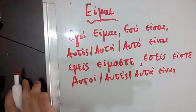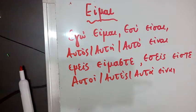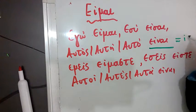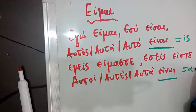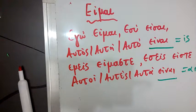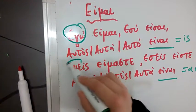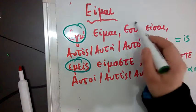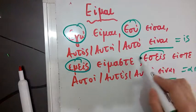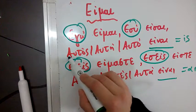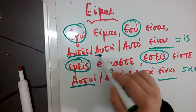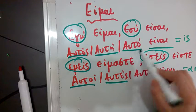So, in Greek, is and are are the same thing. This is something that we should have in mind. Εγώ in singular, εμείς in plural, εσύ, εσείς in plural, αυτός, αυτή, αυτοί, αυτές, αυτό, αυτά.